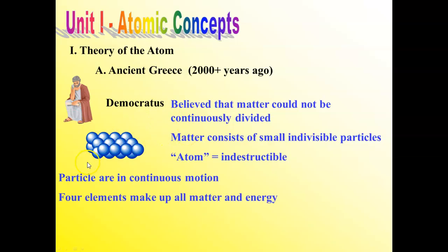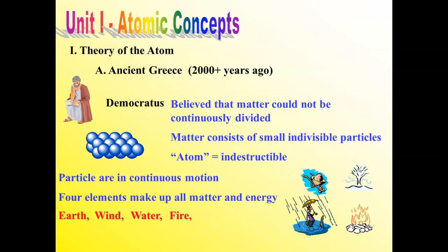The idea that matter consists of little particles moving around helped them explain what they observed. They believed that you could take any type of matter and break it down into four different types. All matter, all energy, could be broken down into four different types of atoms. The four elements are earth, wind, fire, and water.